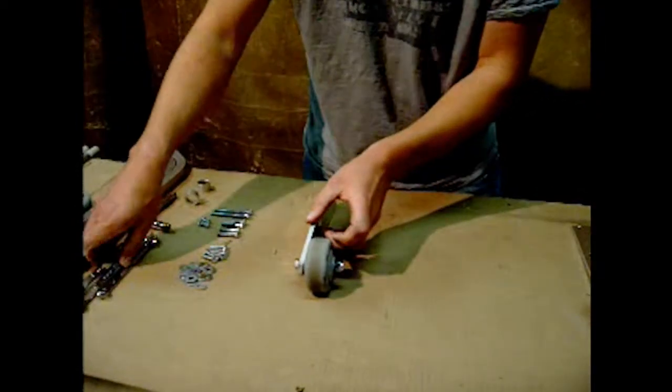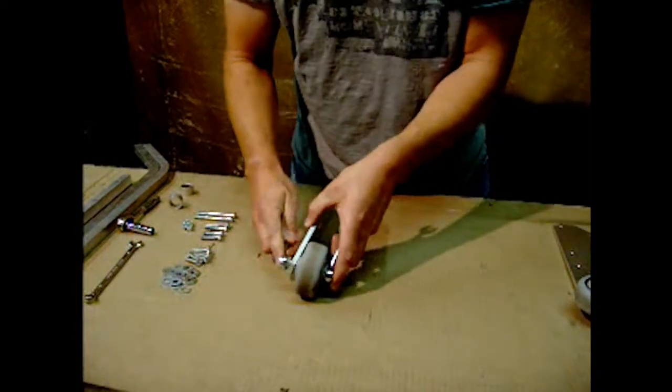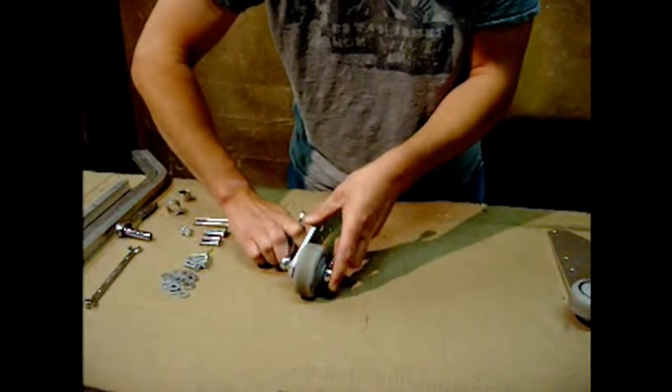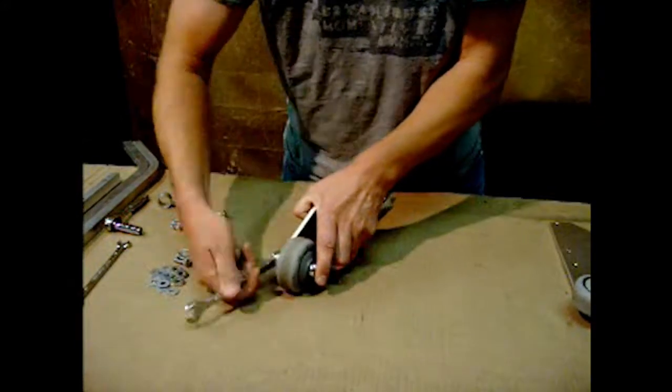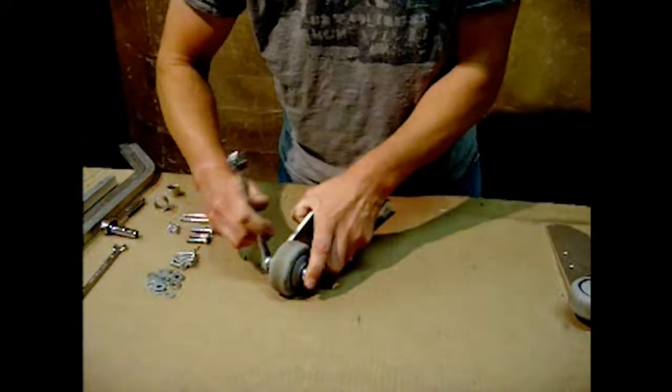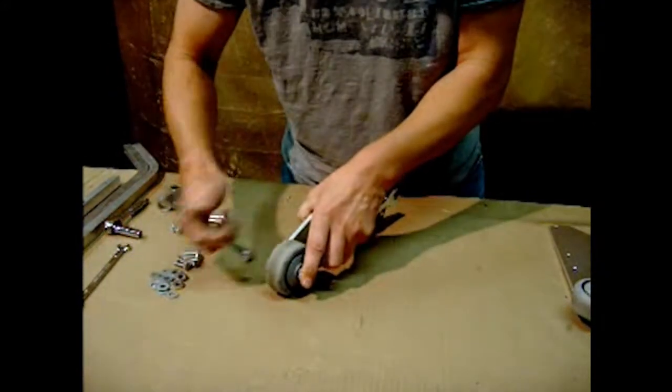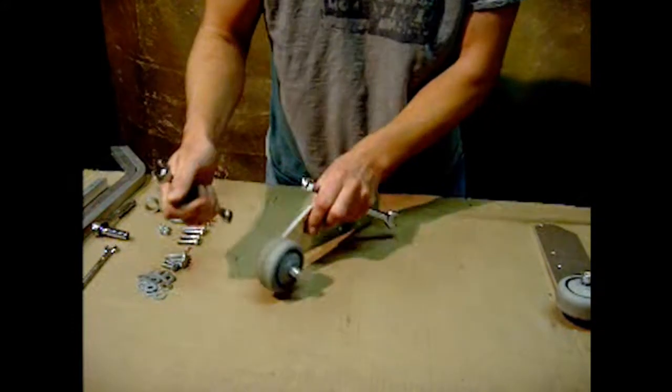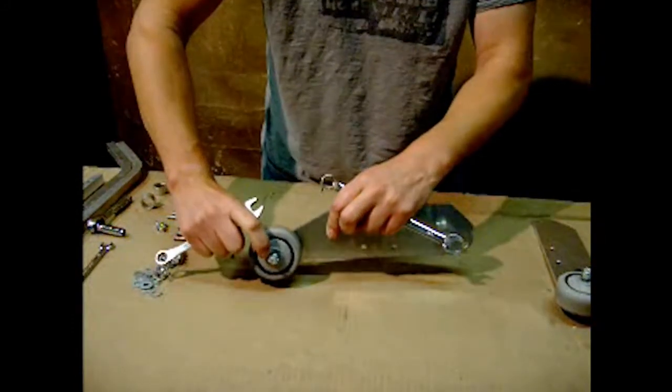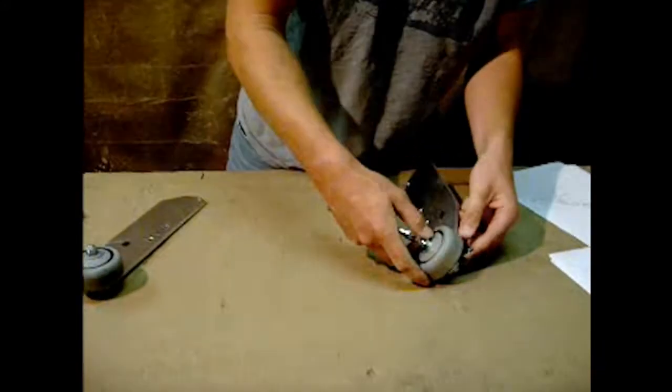And then you can go ahead and tighten up those nuts using two 9/16-inch wrenches. And these bolts, you can go ahead and tighten them up. When you tighten this bolt, it won't affect the bearing because these little plastic pieces push on each other inside the ball bearing.